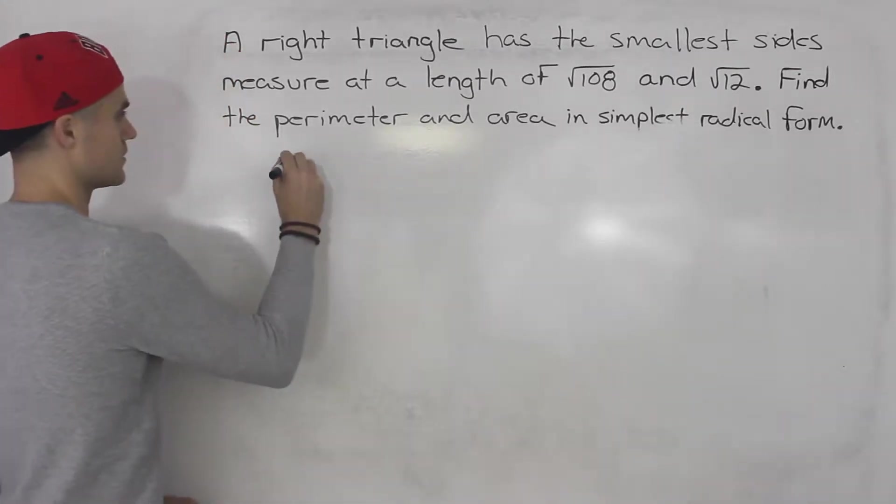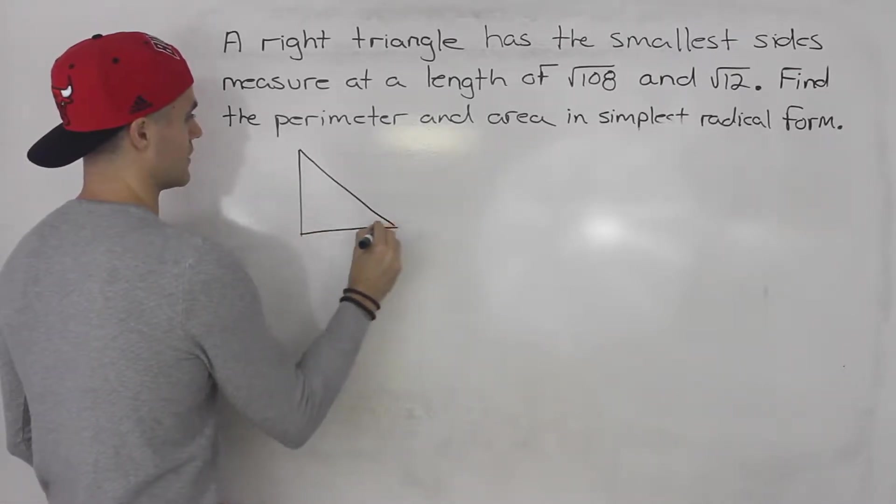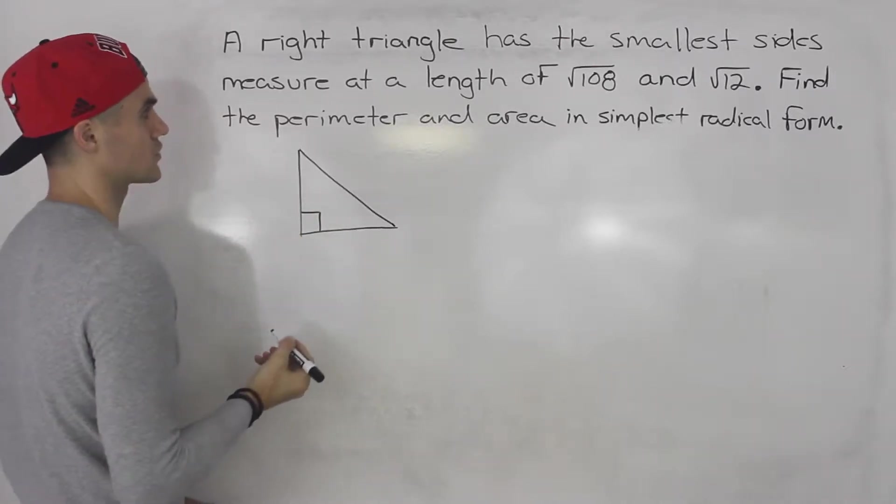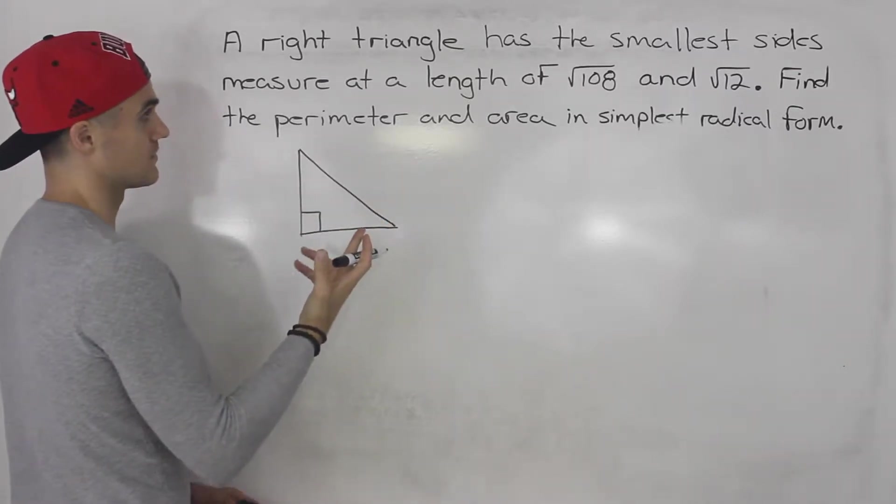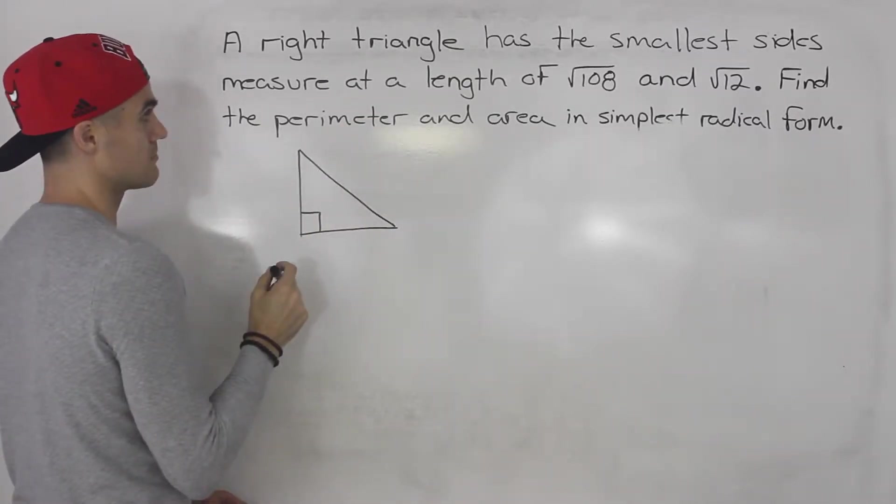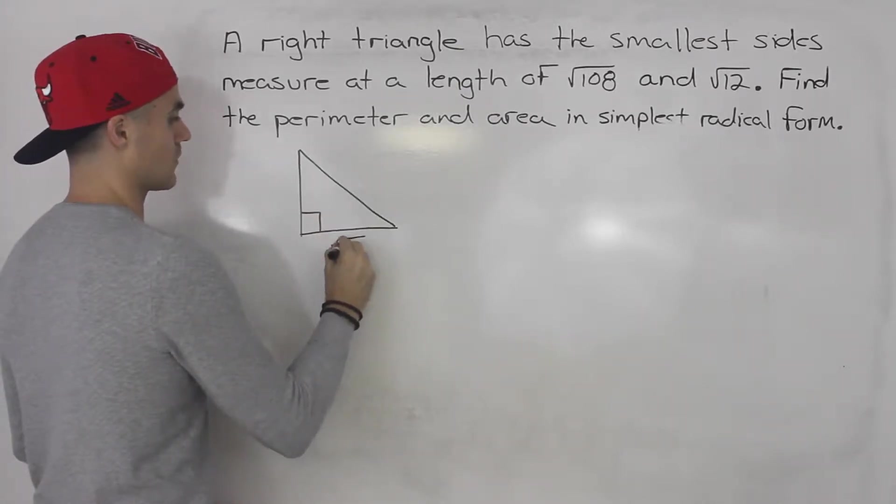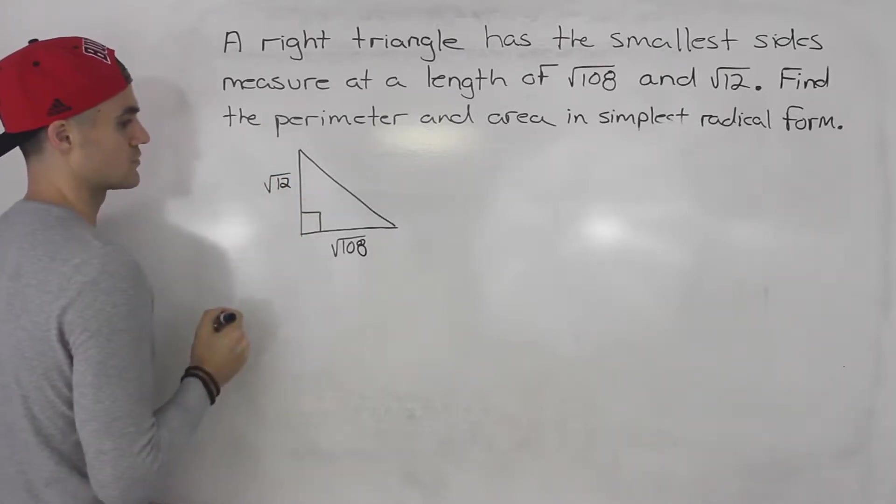So first thing I'm going to do is draw a diagram of this. So this is a right triangle, a right angle triangle. And obviously the longest side of a right angle triangle is the hypotenuse. And we're told the smallest sides measure at a length of root 108 and root 12. So this is root 108 and this is root 12.